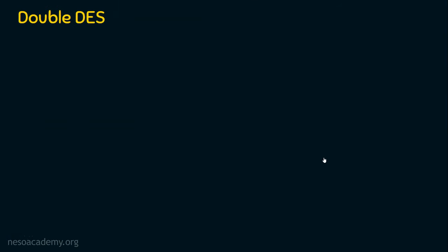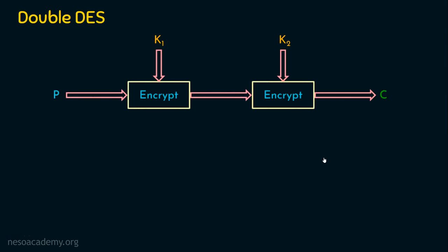Let's now see what is double DES. From the name itself, we can understand that we are going to apply the DES algorithm two times. If we have a plaintext, this plaintext is given to an encryption algorithm — here the encryption algorithm is DES — which takes the plaintext and a key. Since we are doing encryption two times, we need two keys. K1 is applied for the first time and the output is the intermediary ciphertext. This intermediary ciphertext is again given to the same encryption algorithm one more time, where it takes another key K2 and whatever we get is the final ciphertext. The plaintext is converted into ciphertext using the encryption algorithm two times with two different keys, K1 and K2.